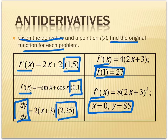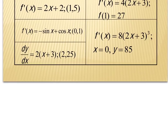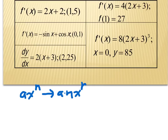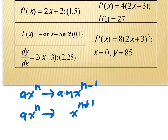Starting with the first problem: f prime of x equals 2x plus 2, going through the point (1, 5). I need to figure out what function gives me 2x plus 2 when derived. The power rule multiplies the exponent times the coefficient and drops the exponent by 1. Going backwards — the anti-power rule — means adding 1 to the exponent first, then dividing by that new exponent.